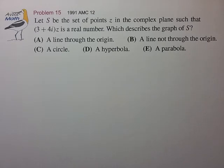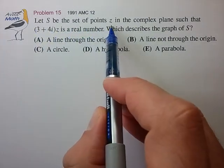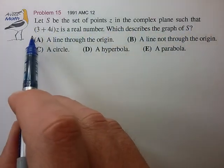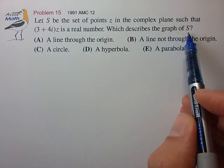Hi, here's our first example complex number problem from the AMC 12. Let S be the set of points z in the complex plane such that (3+4i)z is a real number. Which describes the graph of the set S?